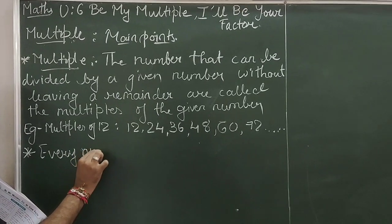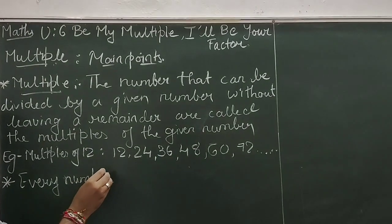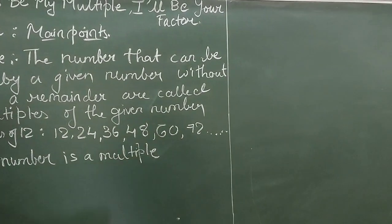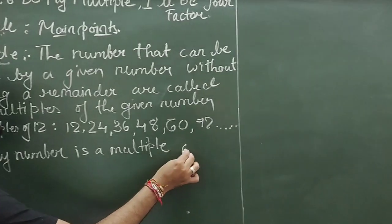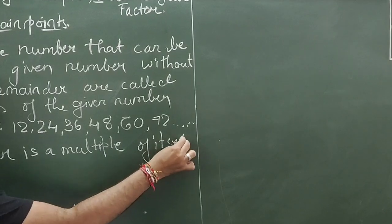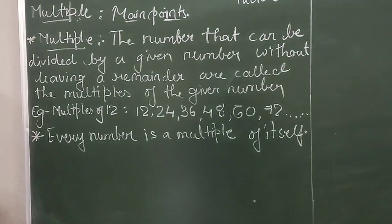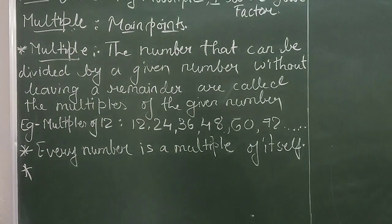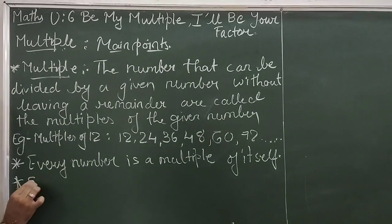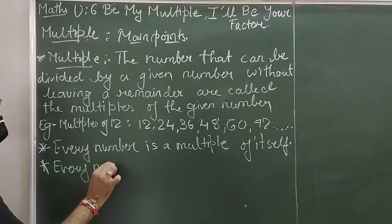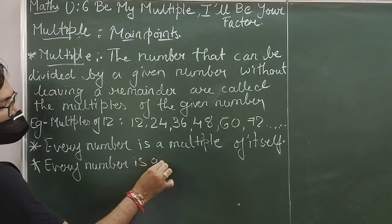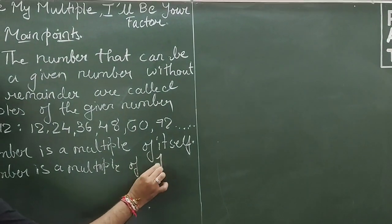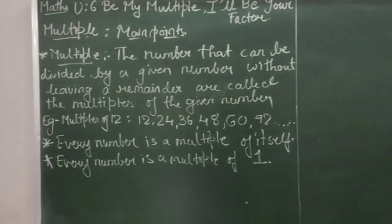Next main point: Every number is a multiple of itself. Next main point: Every number is a multiple of 1.